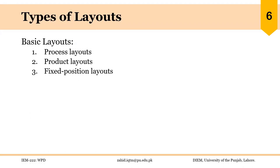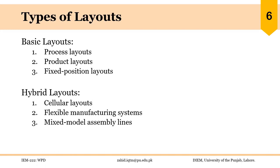There are three basic types of layouts: process layouts, product layouts, and fixed position layouts. There are also layouts that are variations or combinations of these basic layouts, such as cellular layouts, flexible manufacturing systems, and mixed model assembly lines. The cellular layout is especially important in this course and is very useful in lean manufacturing, particularly when focusing on reducing waste in your system.